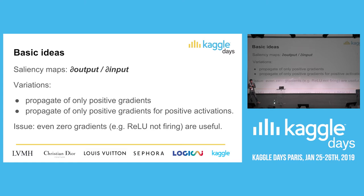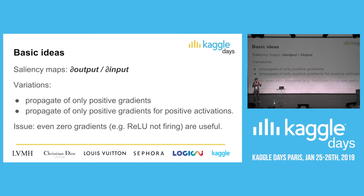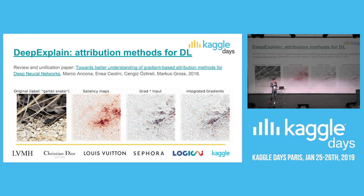There are some problems though. One is that the input is incredibly high dimensional, so knowing how one single tiny feature influences the result may not be useful. Another problem is that derivatives can be zero - for example a ReLU unit that isn't firing has zero derivative, but it could still carry useful information. There are several variants to improve this: taking only positive derivatives, or only positive derivatives with positive activations. But in my opinion the end result is still not great.